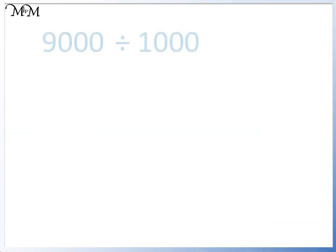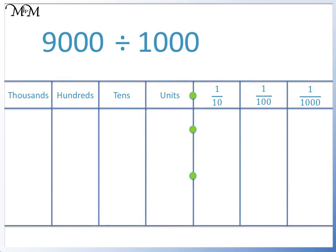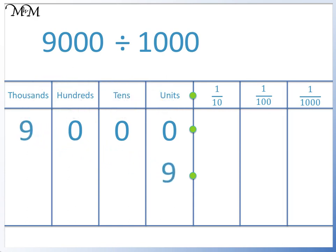For example, 9000 divided by 1000. We can place each digit of 9000 on a place value grid to see what's happening. To divide by 1000, we move each digit three places to the right. We'll start with the 9: 1, 2, 3. We move the 9 to the units column, which is three places to the right of the thousands column.